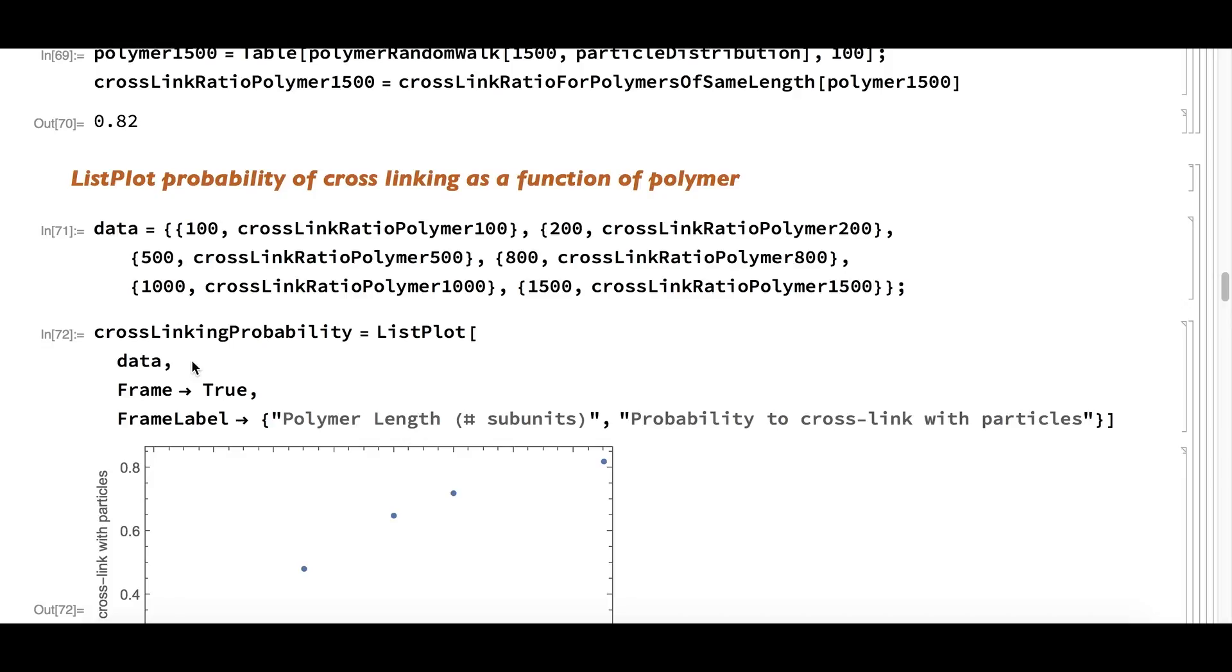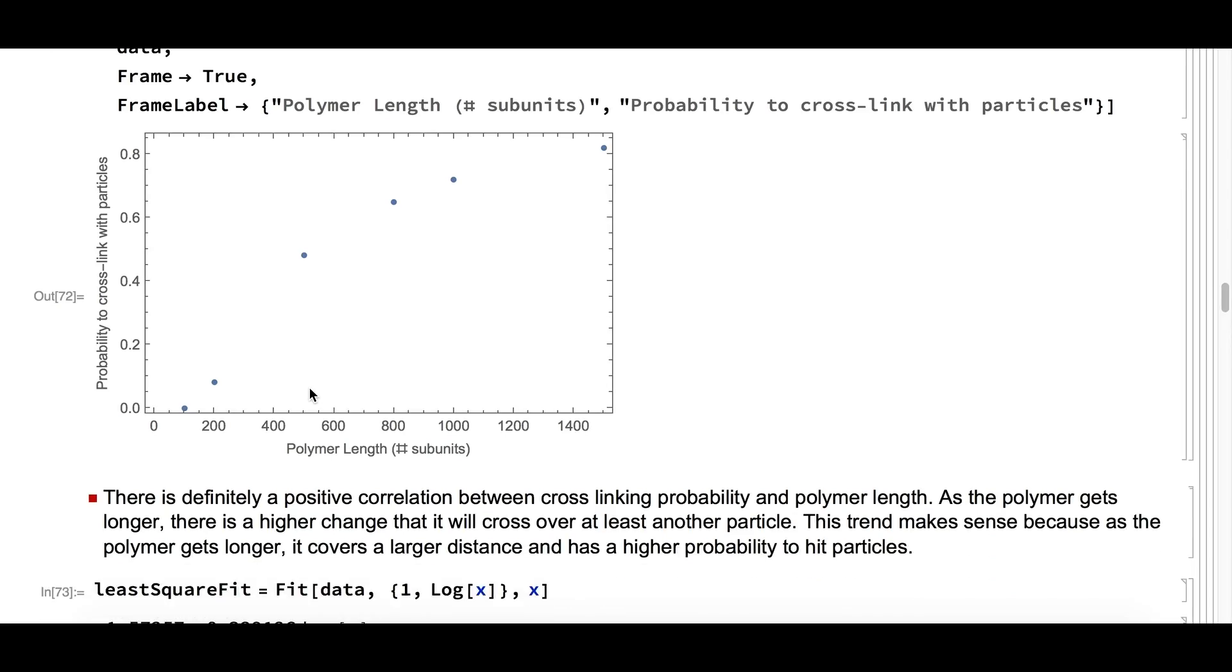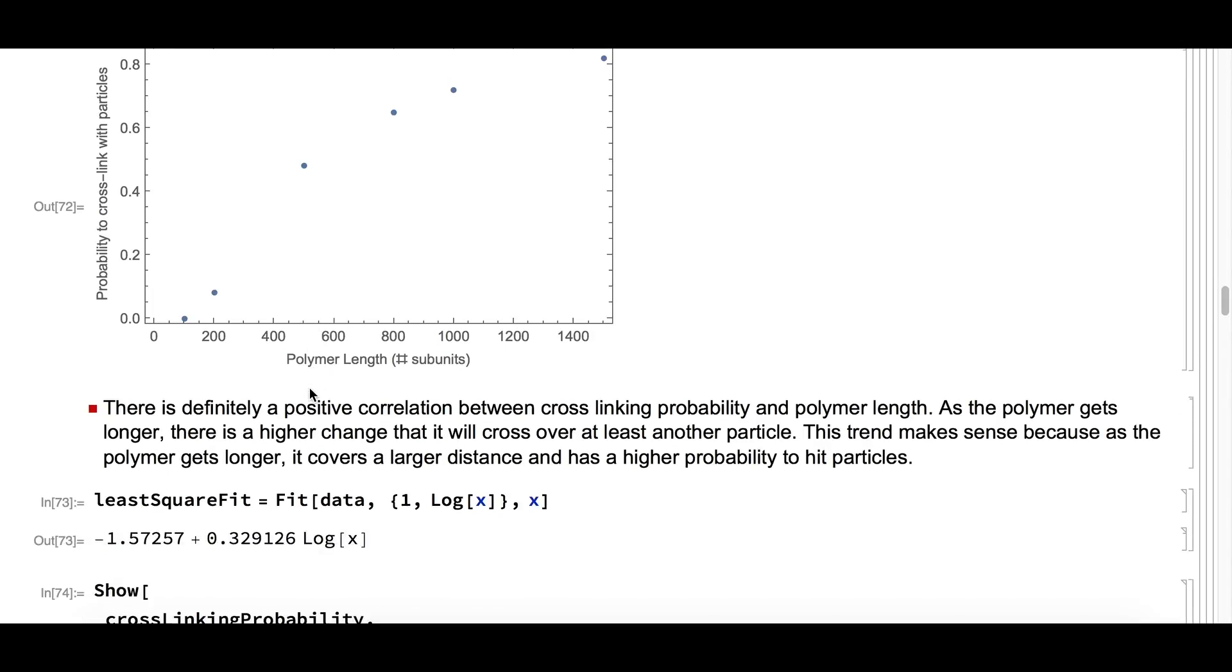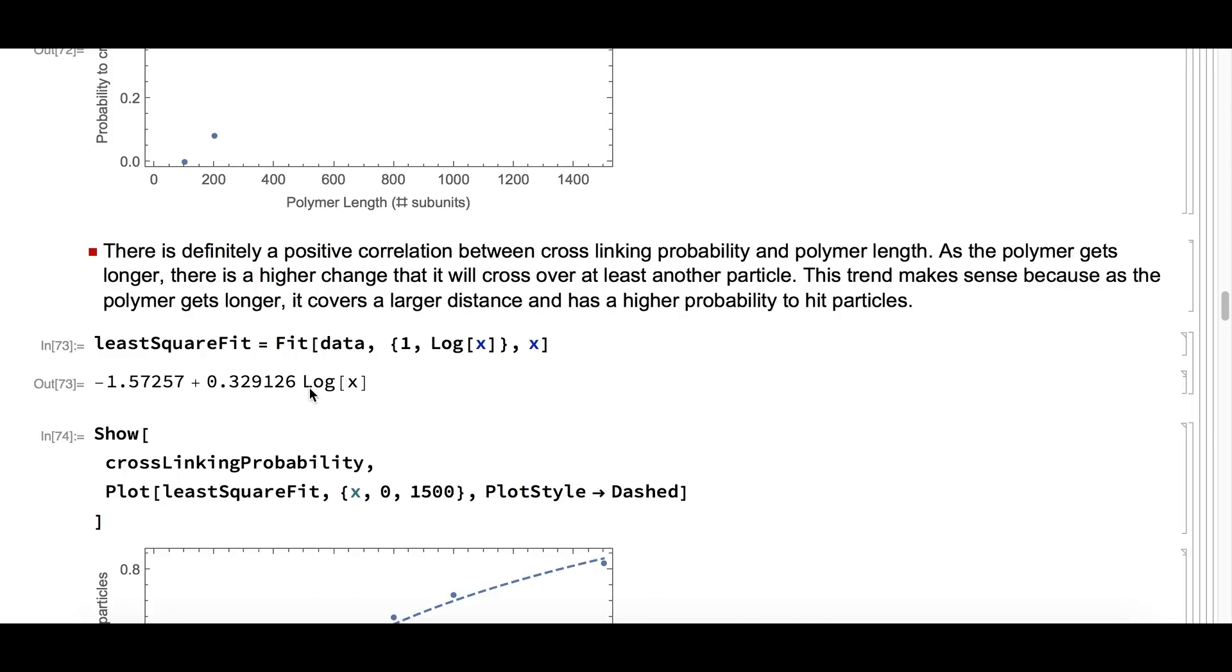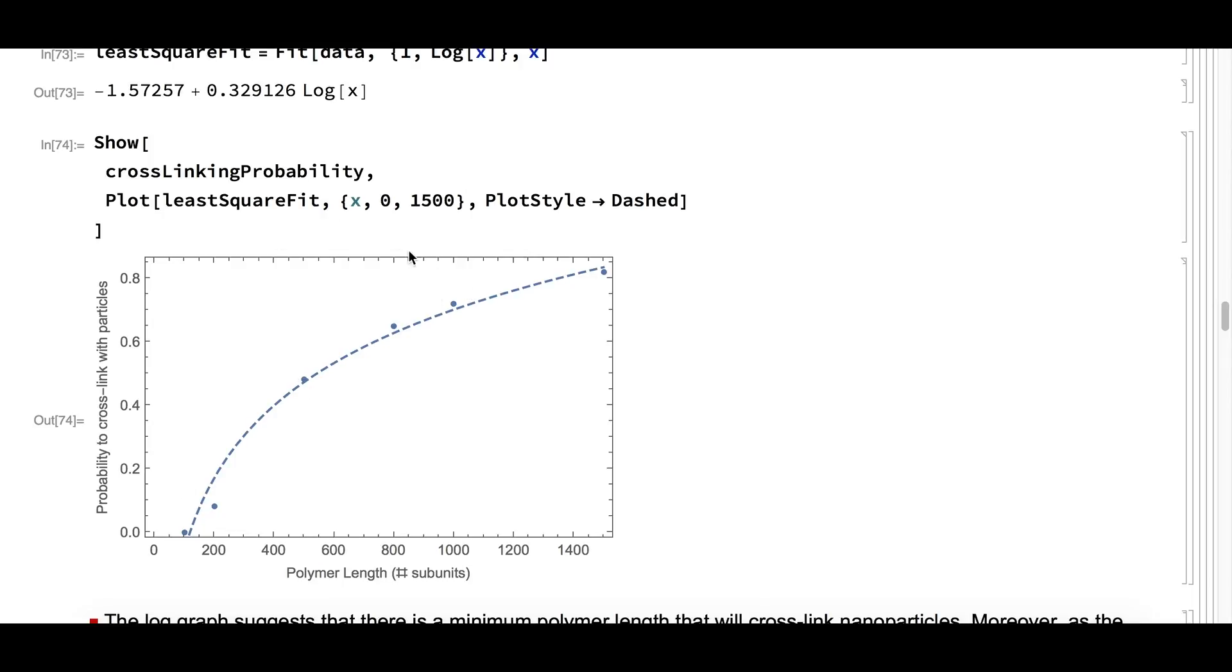The most interesting thing we can obtain from this data is plotting the ratio of cross-linked polymers versus the polymer length. What we find is that as the polymer length increases, the probability to cross-link increases. This makes sense because as the polymer gets longer, it can walk a larger distance and touch a particle. What is even more interesting is that the graph has the shape of a log function. We use Fit to generate a least-squares fit equation and plot it with the data. As you can see, the fit function gives a pretty good fit of the data.